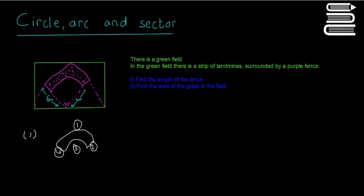The length of sides 2 and 4 is easy enough to figure out. We know the big circle has a radius of 6 metres and the smaller circle has a radius of 4 metres, so the gap between them must be 2 metres. Sides 2 and 4 are each equal to 2 metres.